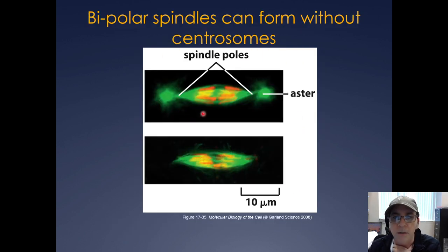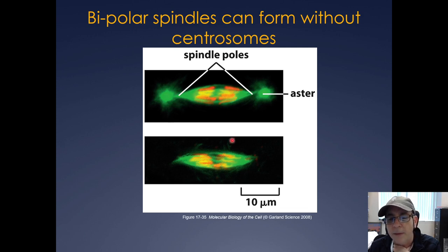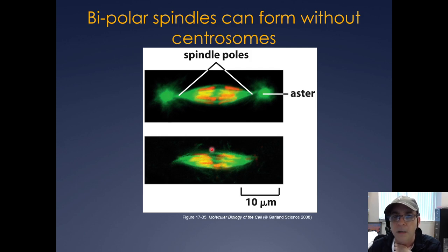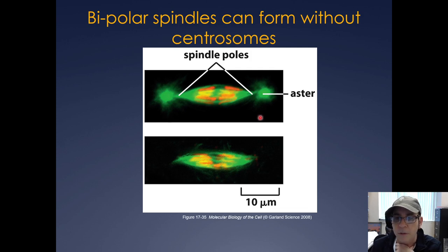Here is a normal cell going through mitosis showing the spindle poles with chromosomes organized in the middle. If you get rid of the centrosomes, you can still form a bipolar spindle — the spindle pole forms even in the absence of the centrosome.